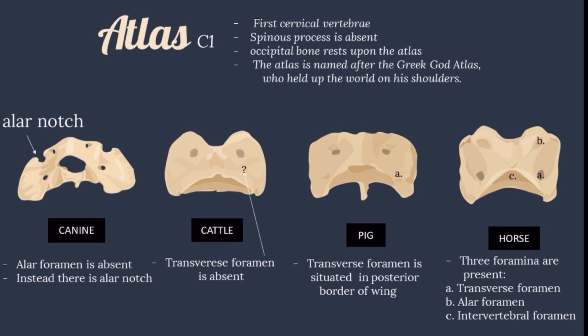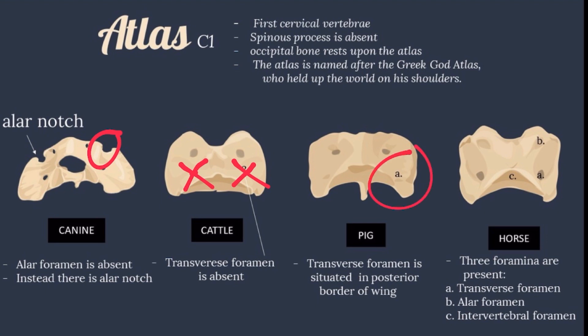Comparing the atlas of the animals: In the dog, the alar foramen is absent; instead, there is an alar notch or incisura. In the cattle, the transverse foramen is absent. In the pig, the transverse foramen is situated in the posterior border of the wing. In the horse, three foramina are present.